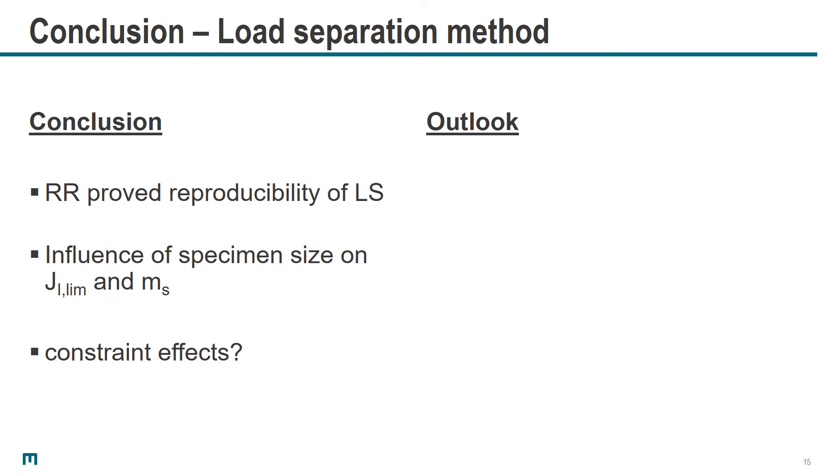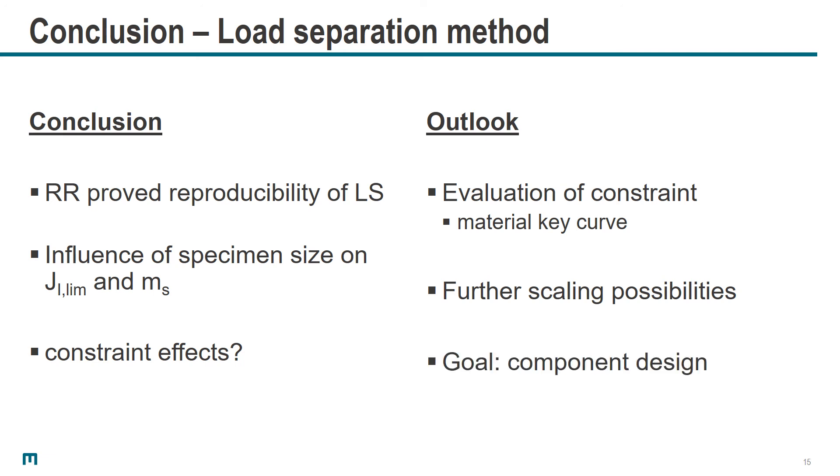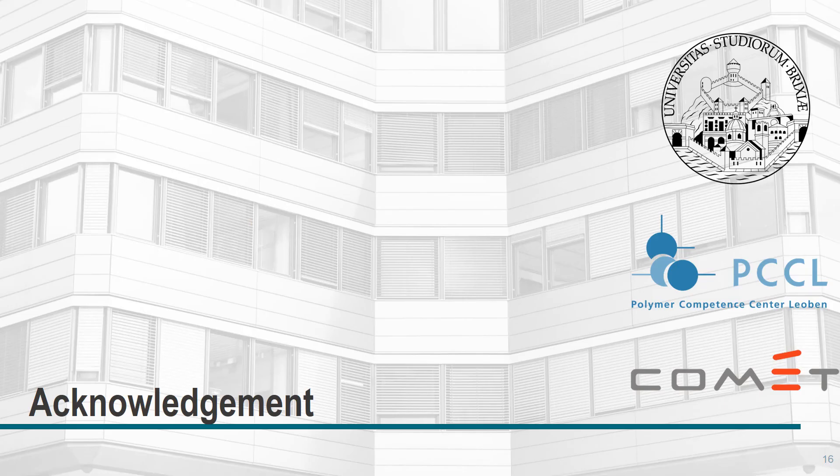At the moment, our best guess is that this has to do with effects of the level of constraint, which are different for different sizes of specimens even though we have the same scaling ratio and material itself. This leads me to the outlook of our current work. What we are currently doing is evaluating the influence of the level of constraint by using the T-stress curve. We would then look into further scaling possibilities to actually use this approach later on, for example in component design, in fracture mechanical component design.